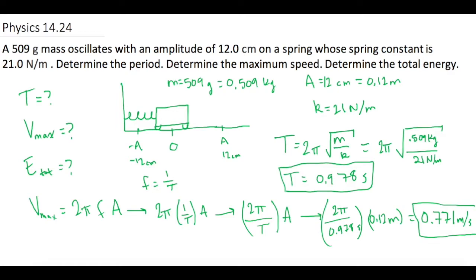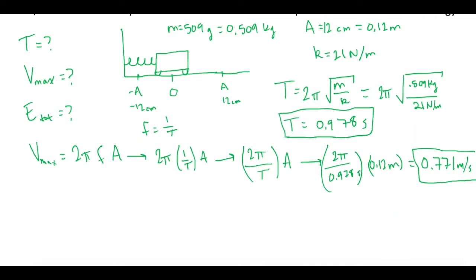All right, so now moving on to the very last one, they want to know what the E total is. We're going to use our conservation of energy equation. Energy equals one half mv squared plus one half k delta x squared.